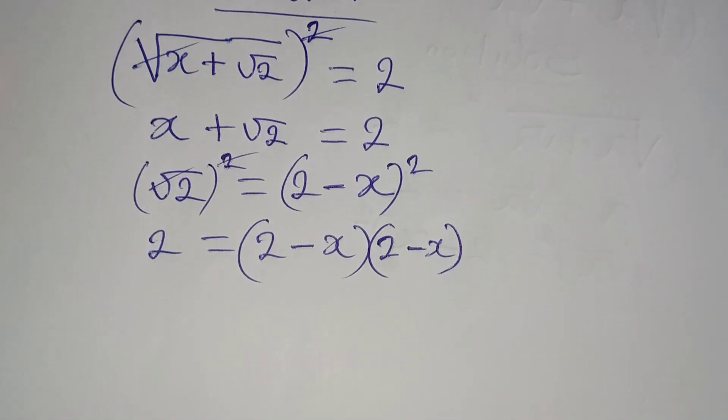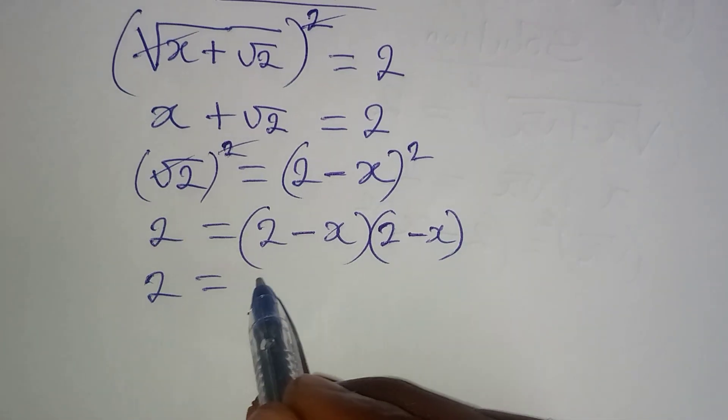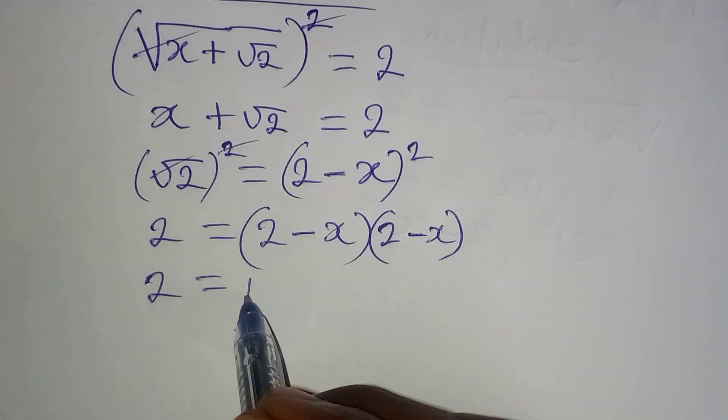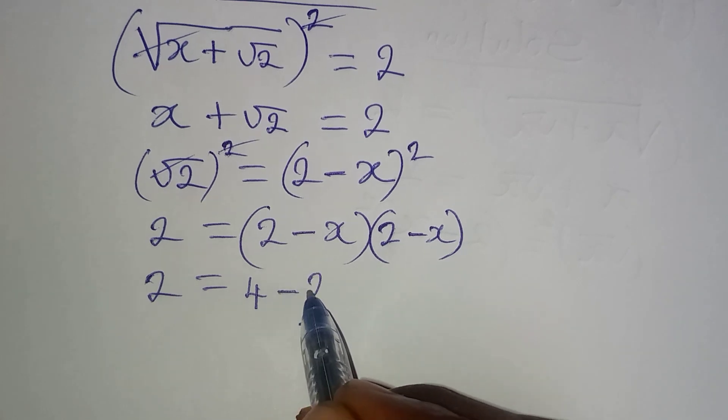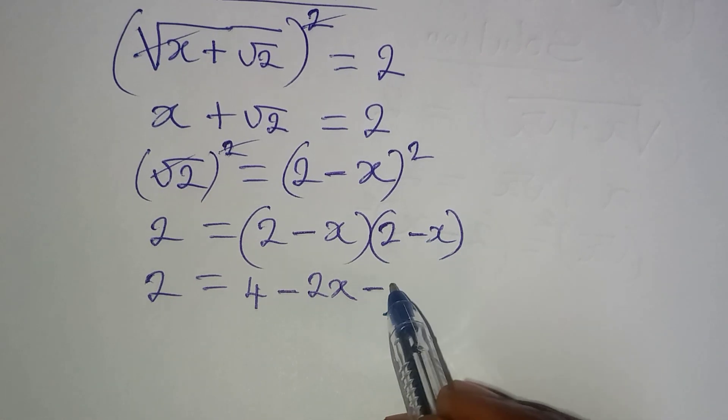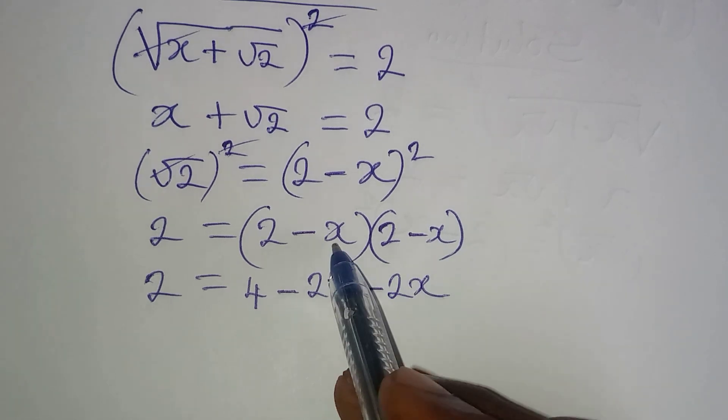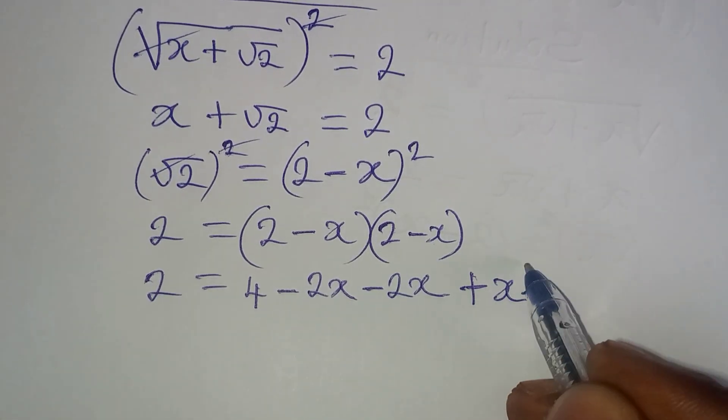And now we can open that bracket. So that 2 will be equal to 2 times 2 will give us 4. Then 2 times minus x will give us minus 2x. Minus x times 2 will give us minus 2x. Then minus x times minus x will give us plus x squared.